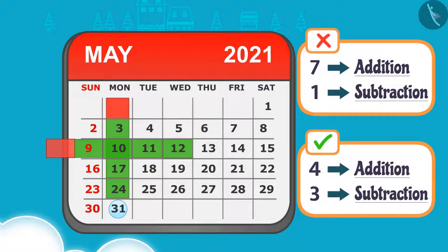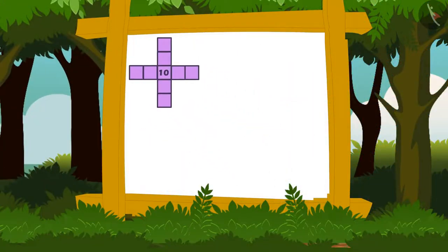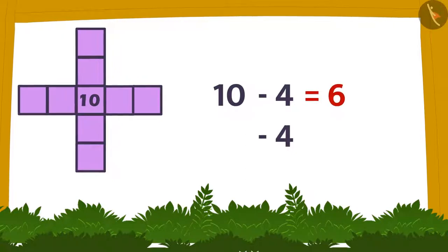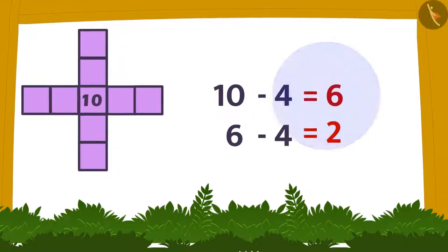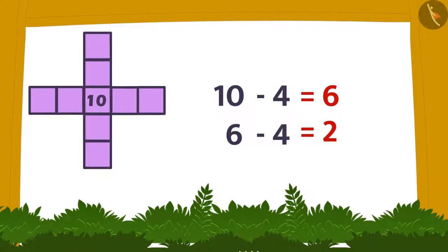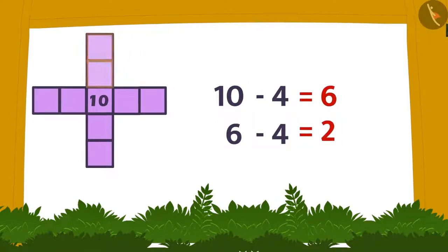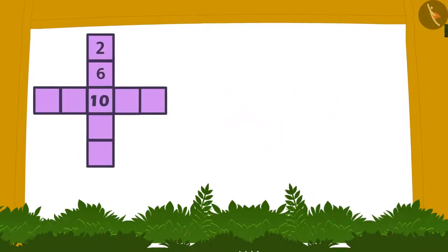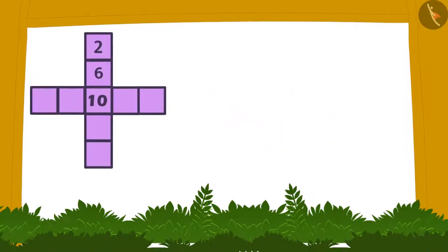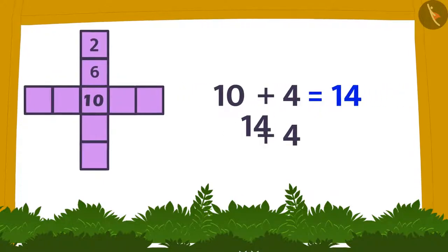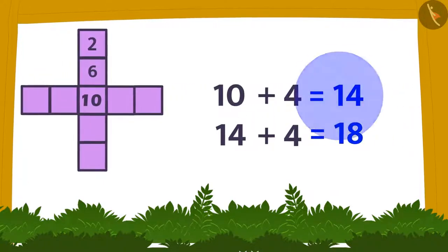Now by successively subtracting 4 from 10 twice I get 6 and 2. These can be filled in two vertical cells above the central number like this. Similarly by successively adding 4 to 10 twice I get 14 and 18.